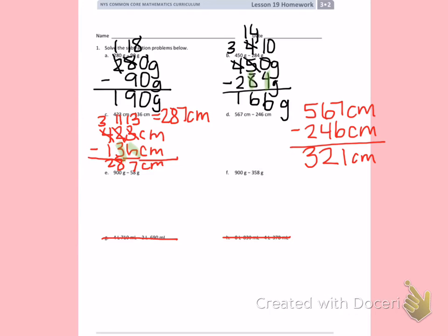Letter E. 900 grams minus 58 grams. This is one of the hardest problems we have because we have to borrow twice before we can even start. Since 8 is the bigger number and it's on the bottom, I need to regroup. I cannot regroup from the tens place because there is nothing to borrow from.